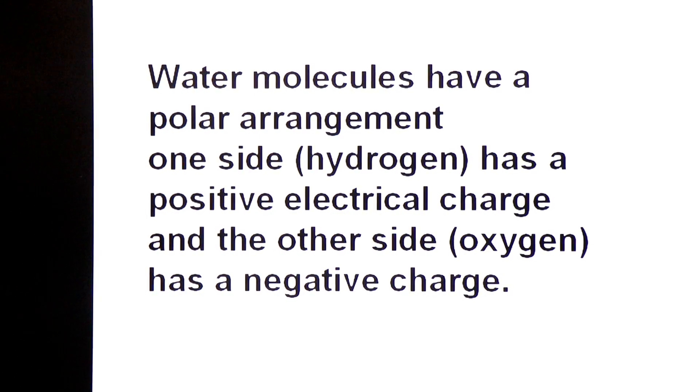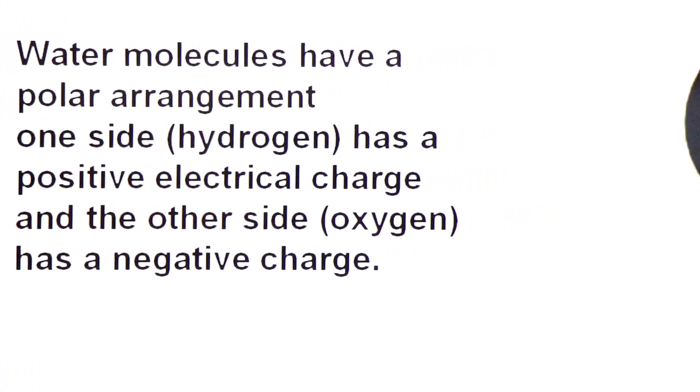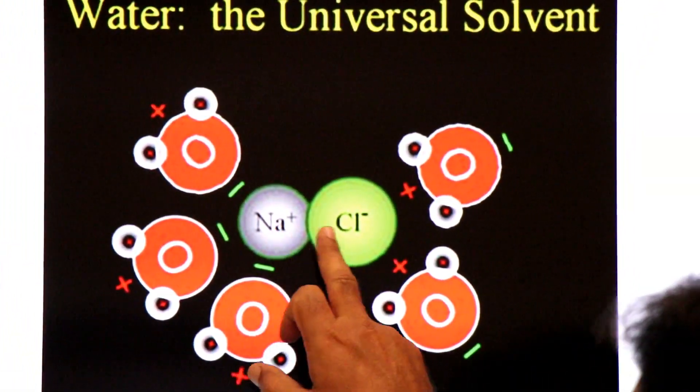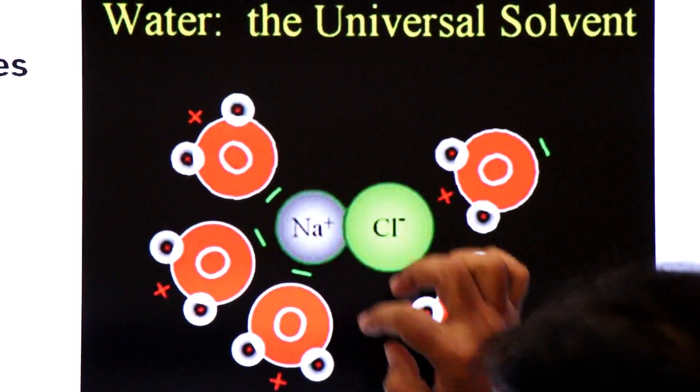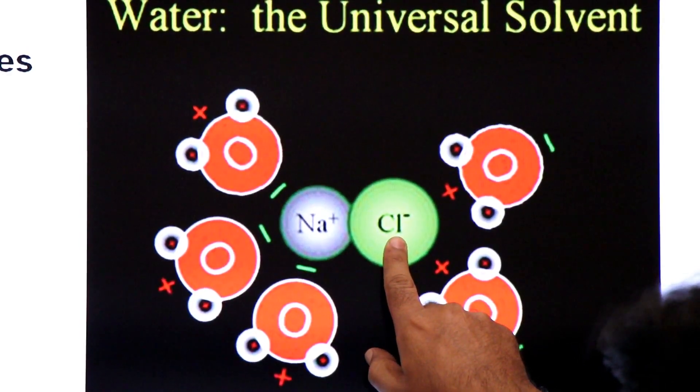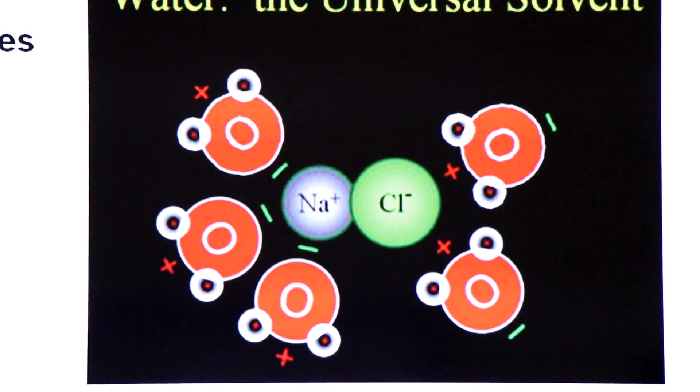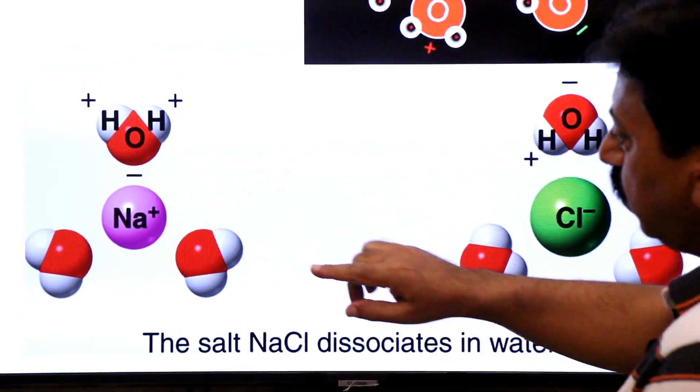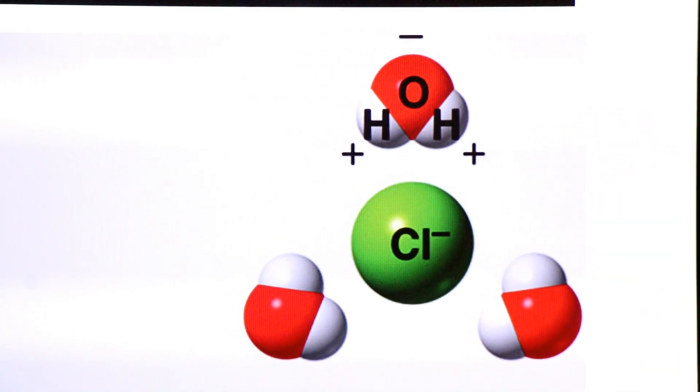Dekhe, water ki polar nature hoti hai. Water molecules have a polar arrangement - one side hydrogen has a positive electrical charge and the other side oxygen has negative charge. The polar water molecules surround positive and negative ions and pull them apart. The salt sodium chloride dissolves very easily in water. Sodium ko surround kiya gaya oxygen ki negative charge se aur chloride ions ko surround kiya gaya positive charge se. This makes water the best solvent.